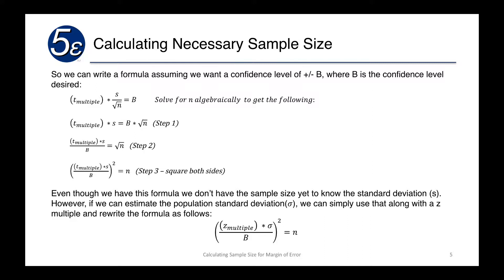Now you may notice that there's a problem because we don't have the sample size to know what the sample standard deviation is going to be. Since we don't have the sample, if we are given a population standard deviation, we can use that along with a z multiple.